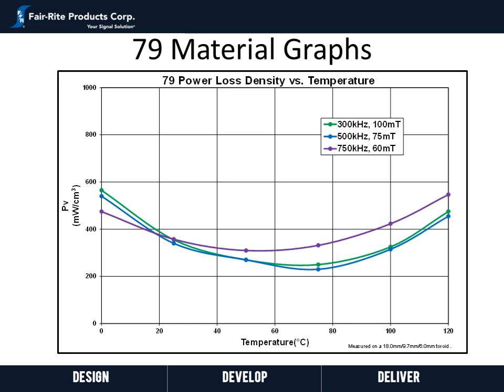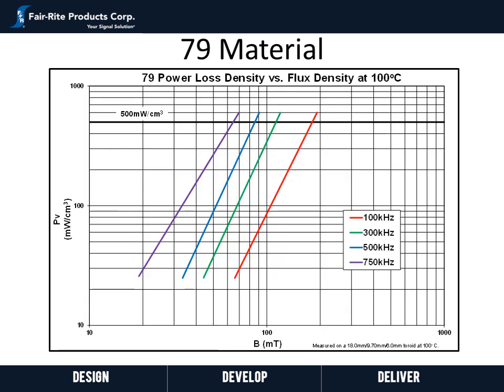At 500 kilohertz, for example. Note all graphs shown are measured on an 18mm OD, 9.7mm ID, and 6mm height toroid. For 79 material, we are plotting power loss density versus flux density at 100 degrees Celsius at frequencies ranging from 100 kilohertz to 750 kilohertz. We have bolded the power loss density of 500 milliwatt per CC for reference, as most designs will be below this. At 500 kilohertz, for example, you don't hit 500 milliwatt per CC until up around 85 milli Tesla — this performs very well compared to other similar competitor materials.